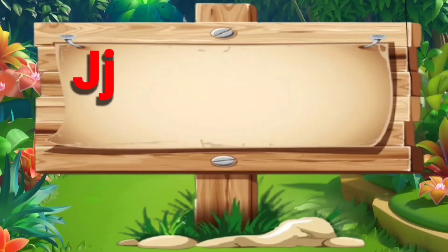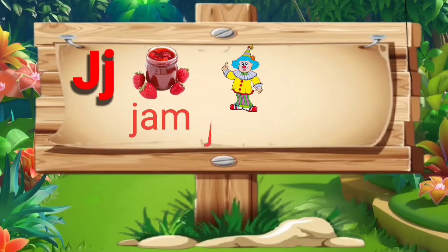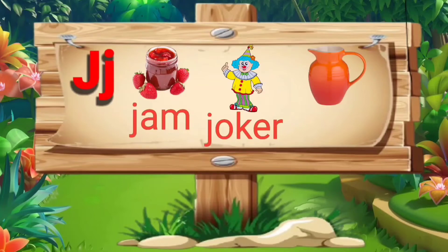J. J for jam: J, A, M — jam. J for joker: J, O, K, E, R — joker. J for jug: J, U, G — jug.